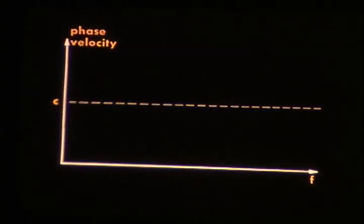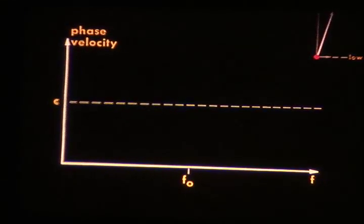But in an optical material, the dipoles resonate to some frequency, F0. If the light incident on it has a frequency quite a bit below F0, the resultant signal, which is represented by the white phasor, lags only a bit behind in phase. Compared to C, the phase velocity is reduced only a small amount by the material.